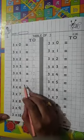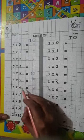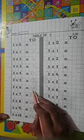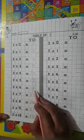3 10s are 30. Now we will read again. 3 5s are 15, 3 6s are 18, 3 6s are 18.